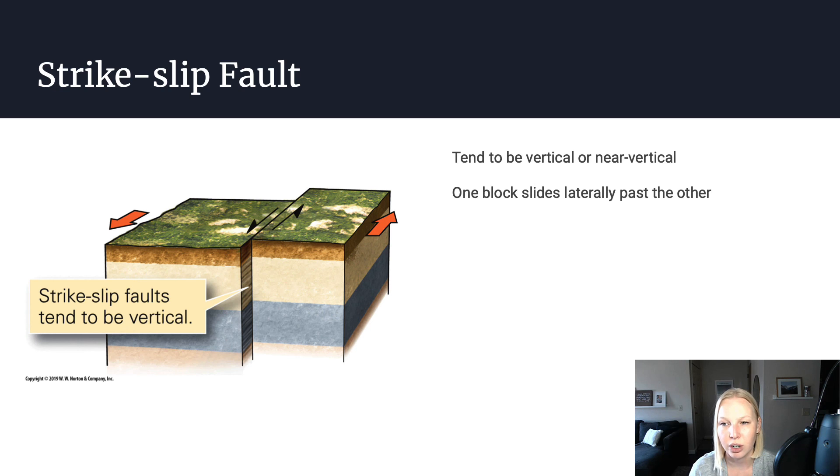These tend to be vertical or near vertical, but not always. You can have strike slip faults that have a dip to them. And generally speaking, these blocks are moving side to side to one another.